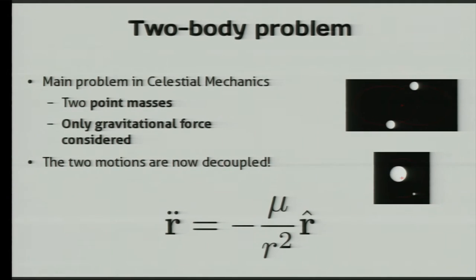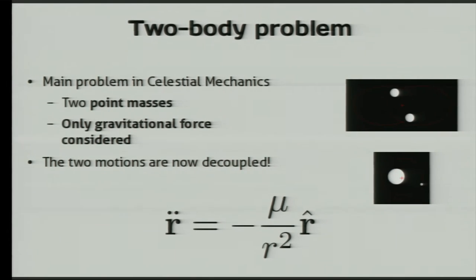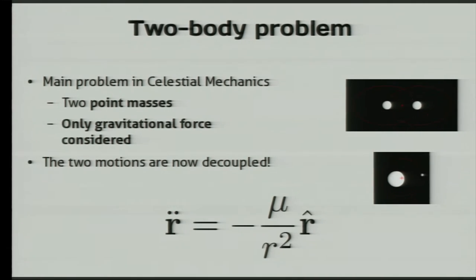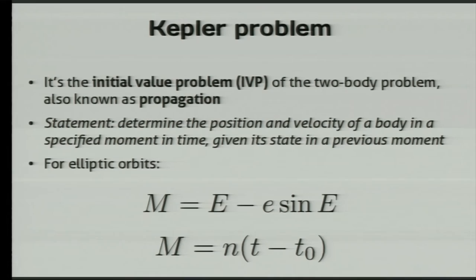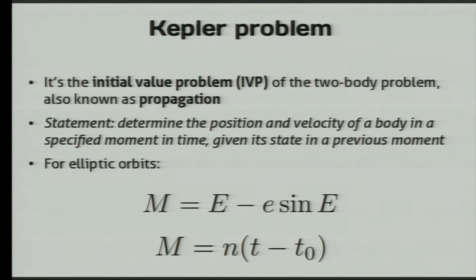In the limiting case, we are considering that these masses have no radius, so they are just geometric points in space. As we are usually considering the motion of a spacecraft around a planet or a moon, we can assume that the second body is very small and doesn't have any effect on the orbit of the first one. That is the equation that controls everything. The second one is the Kepler problem, which is the initial value problem. I have a position and a velocity at some moment in time, and after some time I want to know where my spacecraft is going to be. This is called propagation.